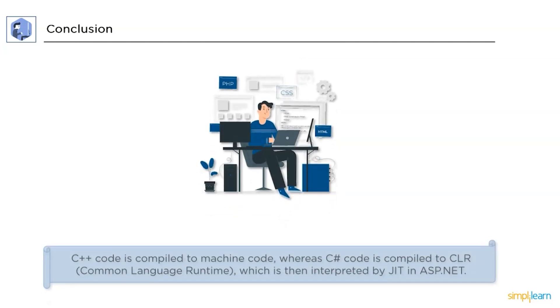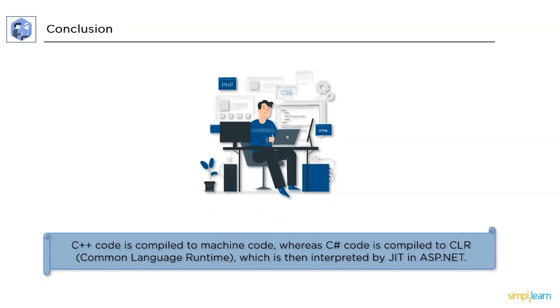Next up, C++ code is compiled to machine code. Whereas, C Sharp code is compiled to CLR that is Common Language Runtime which is then interpreted by JIT in ASP.NET.